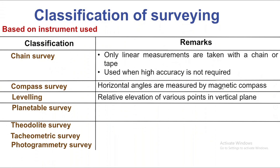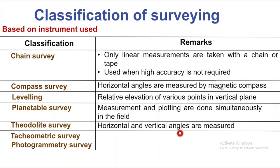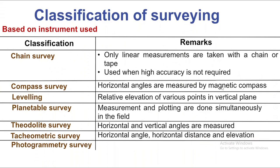For leveling, we are measuring in a vertical plane and measuring the relative elevation of points. For plane table survey, we are doing measurement and plotting simultaneously. For tacheometric survey, we are measuring horizontal and vertical angles and horizontal distance. Topographical survey covers the topographical details of the area.